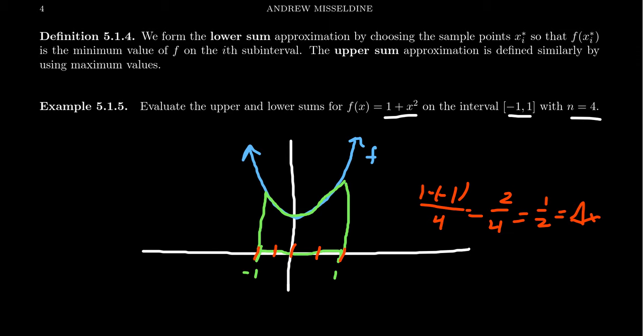So for the lower sum, we'll choose xi star so that f(xi star) is always minimum. We can minimize that. So for this picture, if you look at the first interval, we would choose this value right here, which would be the minimum of the first interval. Then you choose this value to be the minimum of the second interval. You choose this value again to be the minimum of the third interval.